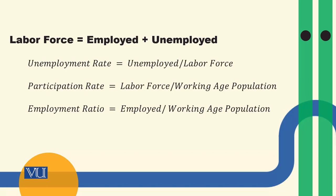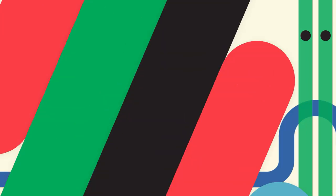Employed and unemployed milkar hamari labour force banti hai. Unemployment rate hum calculate kertay hain: number of unemployed persons divided by the labour force. Participation rate — ek aur term hum use karenge — yeh calculate hoti hai: labor force divided by the working age population. Similarly, another concept is the employment ratio, which is calculated by dividing the employed persons by the working age population.